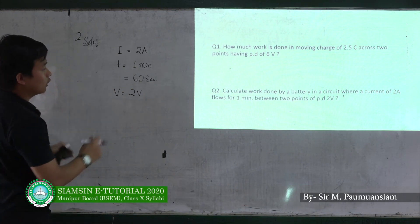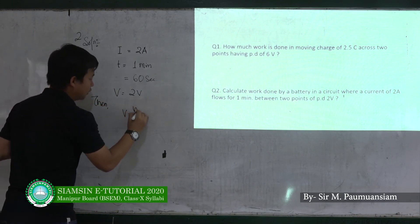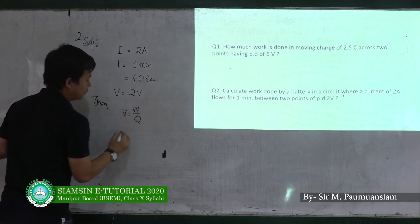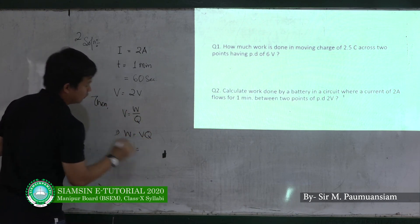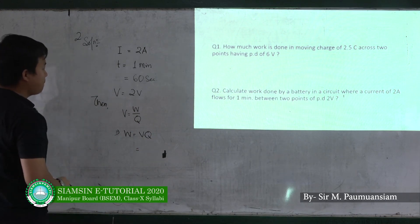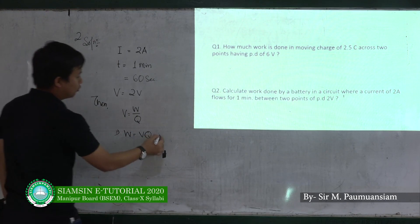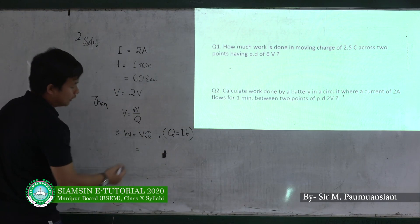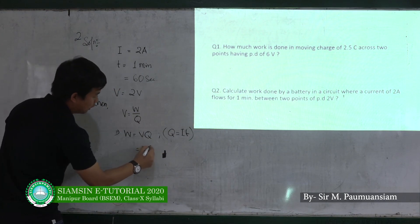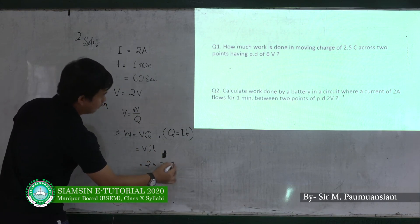Work done formula: W equals V multiplied by I multiplied by T. Substituting the values: V equals 2, I equals 2, T equals 60 seconds. Work done equals 2 multiplied by 2 multiplied by 60, which equals 240 joules.